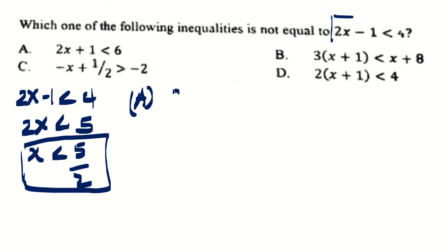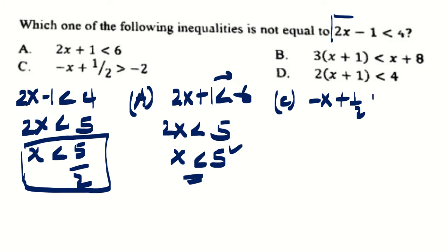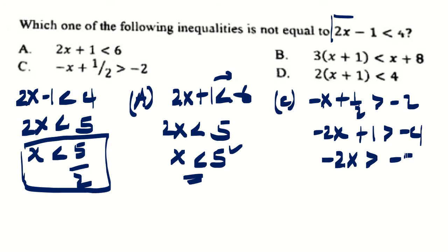For choice A — 2x plus 1 less than 6: shift the 1, so 2x less than 5, divide by 2, x less than 5 over 2. It is the same, so A works. For choice C — negative x plus 1 over 2 greater than negative 2: multiply by 2 to get negative 2x plus 1 greater than negative 4, then shift 1 to get negative 2x greater than negative 5. Divide both sides by negative 2 — the inequality changes — so x less than 5 over 2. Choice C is also correct.